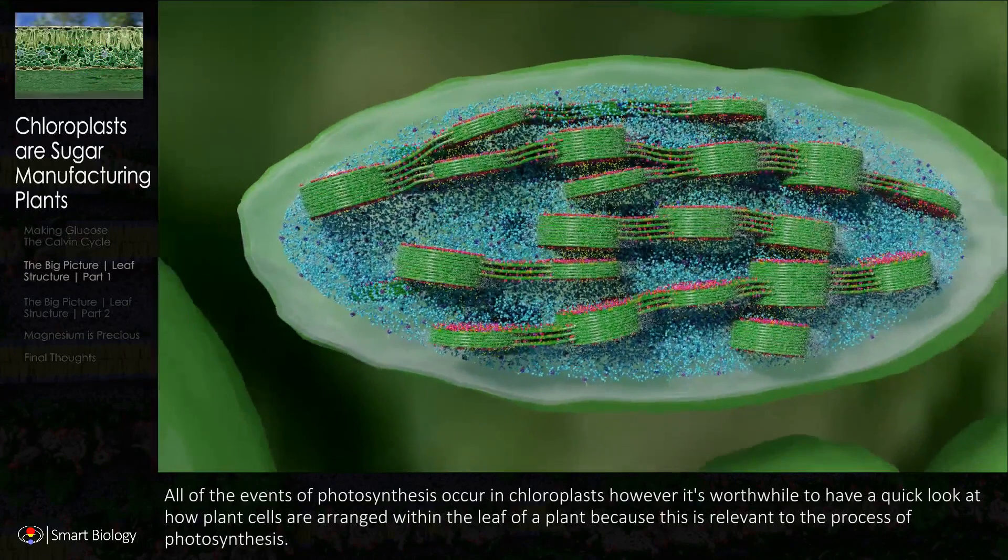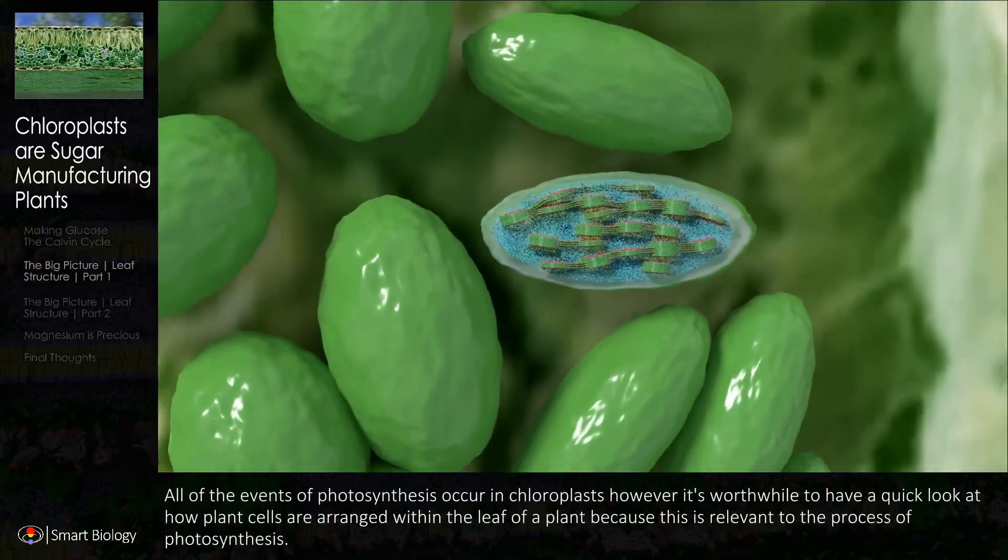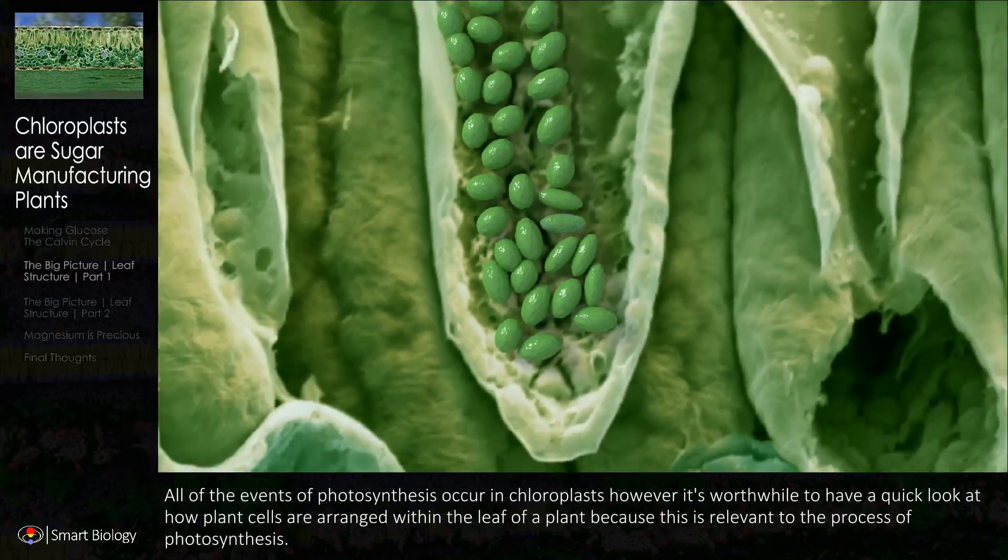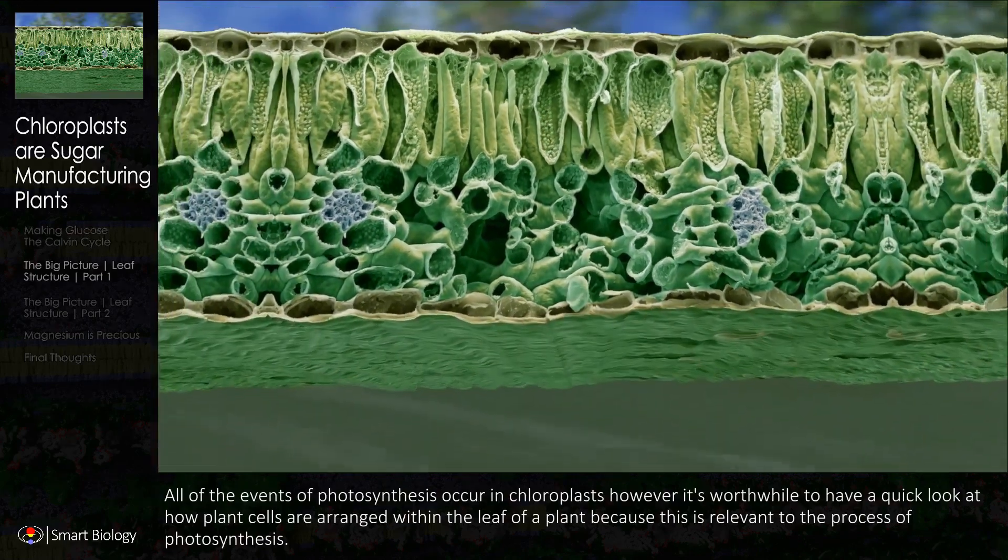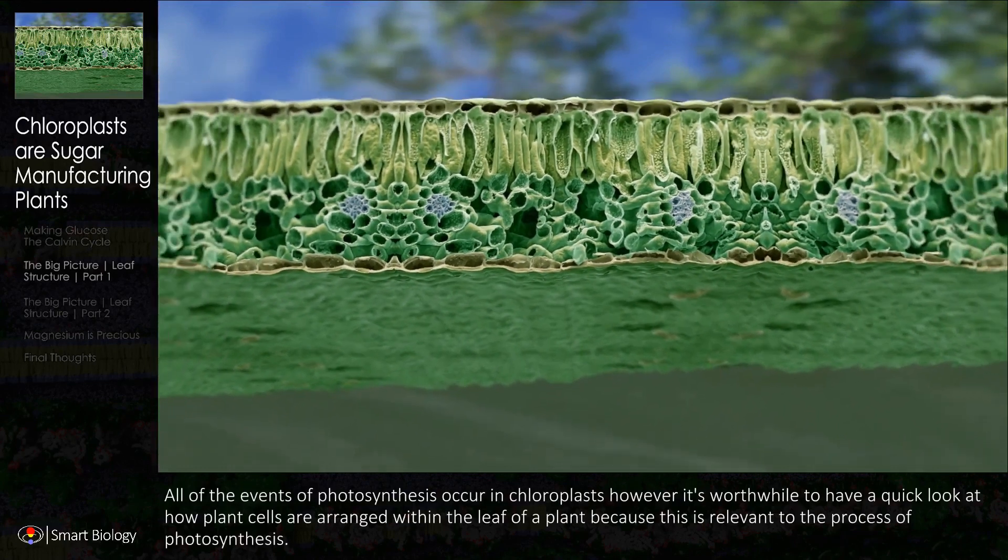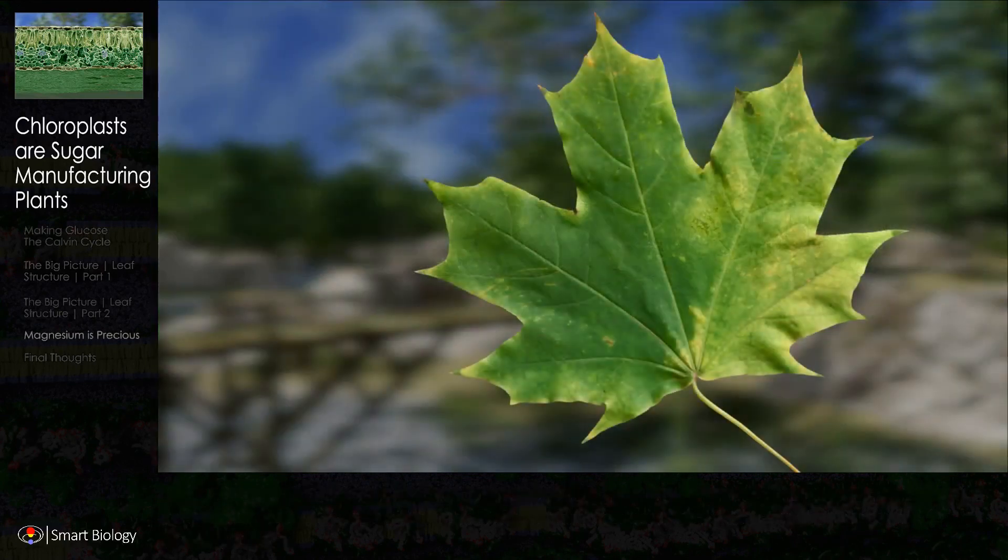All of the events of photosynthesis occur in chloroplasts. However, it's worthwhile to have a quick look at how plant cells are arranged within the leaf of a plant because this is relevant to the process of photosynthesis.